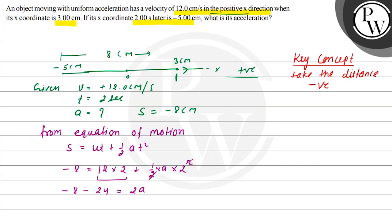This equals 2a after the 2s cancel. Now minus 8 and minus 24 is minus 32 equals 2a. Dividing by 2, we get acceleration value as minus 16 centimeters per second squared.